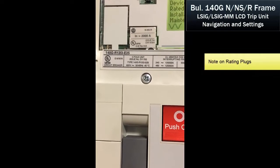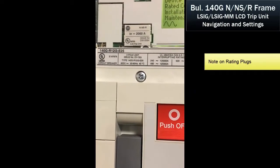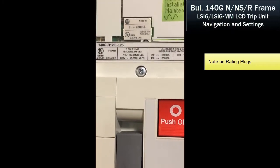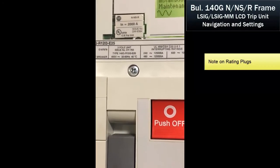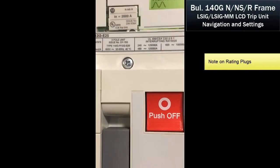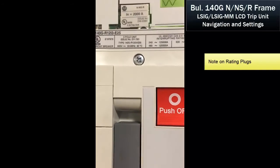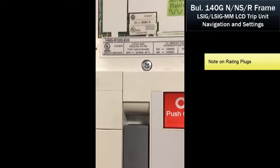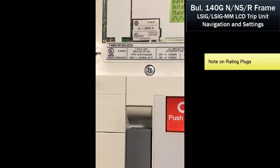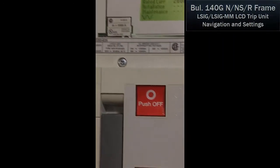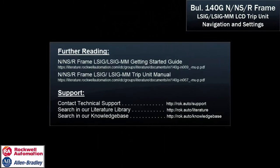The thing to note on these breakers is that you can put rating plugs in, and the rated current value will change. You could put an 1800 or 1600-amp rating plug in there and change the rating of the breaker. In this particular breaker, you could put up to a 2500-amp rating plug — this is a 2500-amp MCCB. That takes us through the setup and display portion of the menu. If you have any questions, please let us know. Thank you.